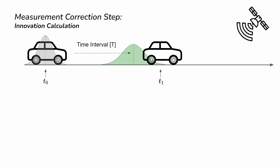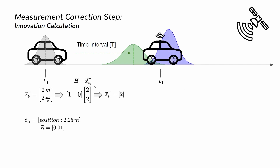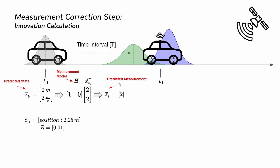The next step is when we receive a new measurement. Assume the measurement received is not two — we predicted the car is at position two, so the predicted measurement is two. But the actual GPS measurement says the position is 2.25 meters, which is 25 centimeters off compared to the predicted measurement. The R matrix is the measurement noise covariance assumed in this example. We then have the predicted state, the measurement model H, the predicted measurement, the actual measurement, and the measurement noise covariance.